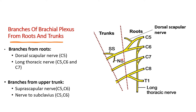Two nerves arise from the upper trunk. The first is the suprascapular nerve, with root value C5 and C6, because the upper trunk is formed by union of C5 and C6 roots. The second is the nerve to subclavius, which supplies the subclavius muscle, also with root value C5 and C6. The middle trunk and lower trunk and the divisions of these trunks give no branches.